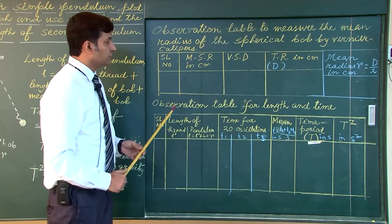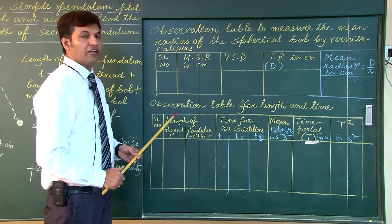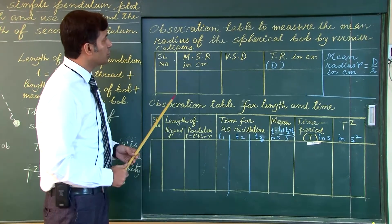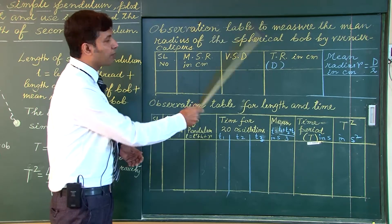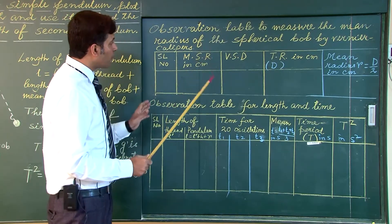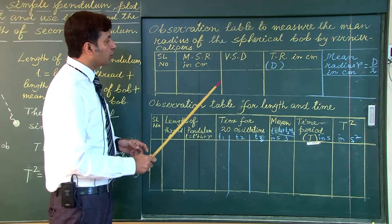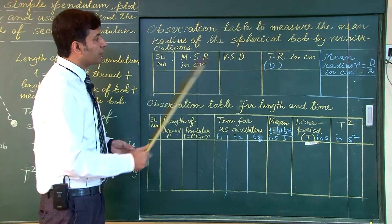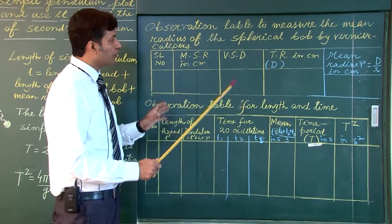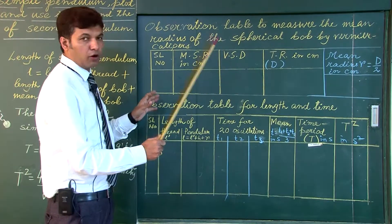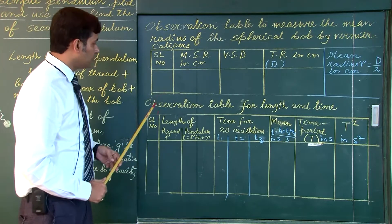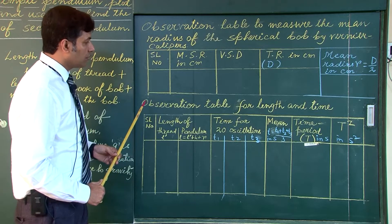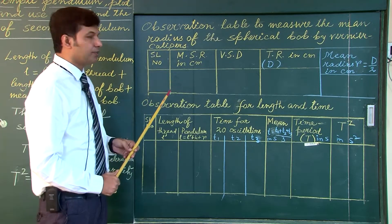These are the observation tables required to measure the effective length of the second pendulum. The first observation table is used to measure the mean radius of the spherical bob. With vernier calipers we calculate the mean diameter of the spherical bob, and diameter divided by 2 gives the mean radius. The second observation table is the most important one, required to find the effective length of the seconds pendulum.